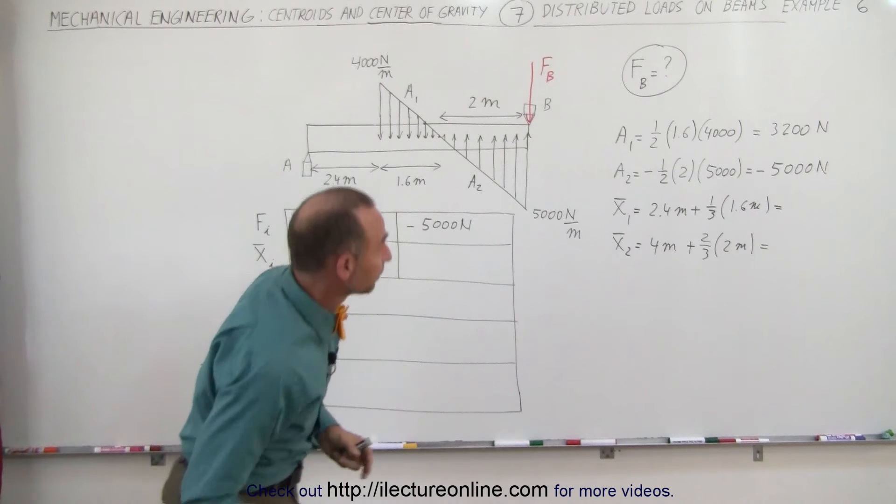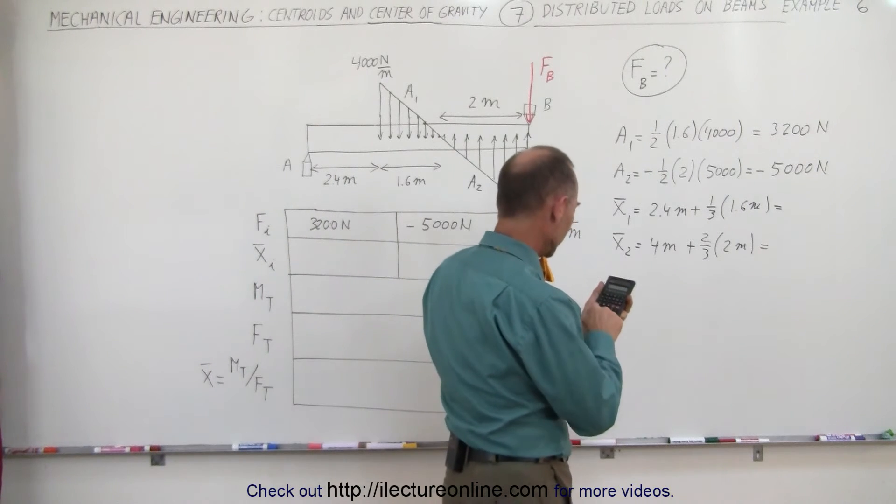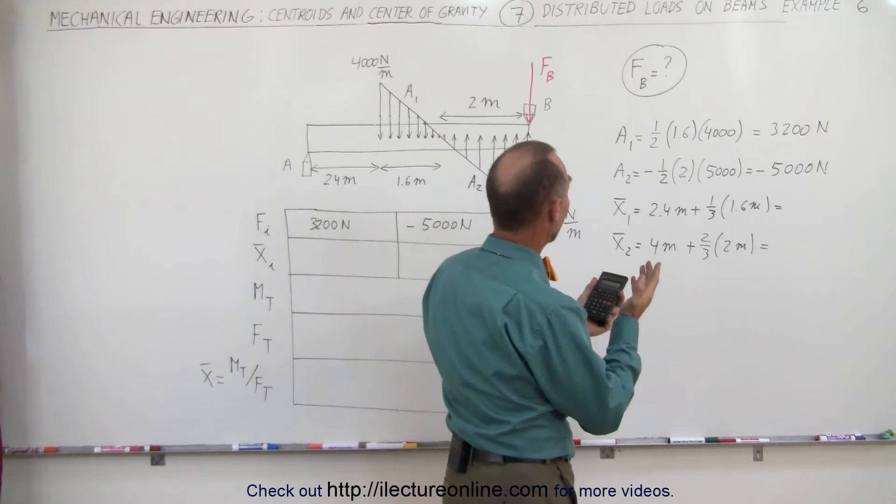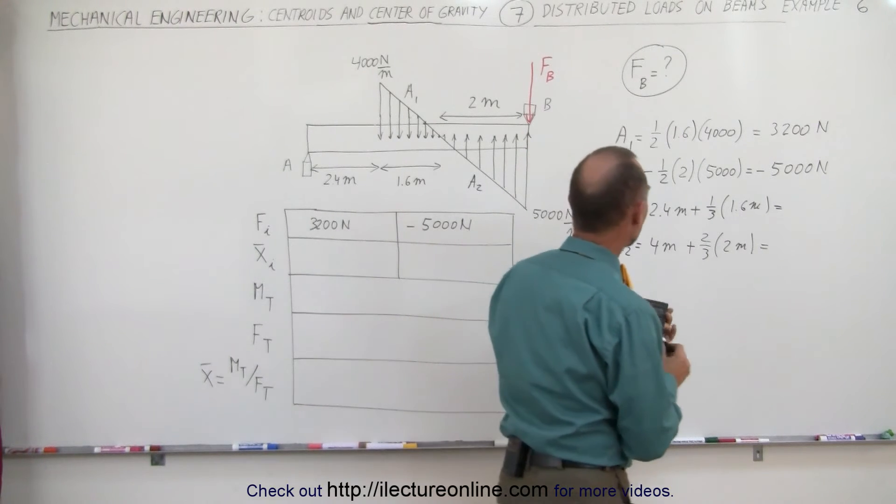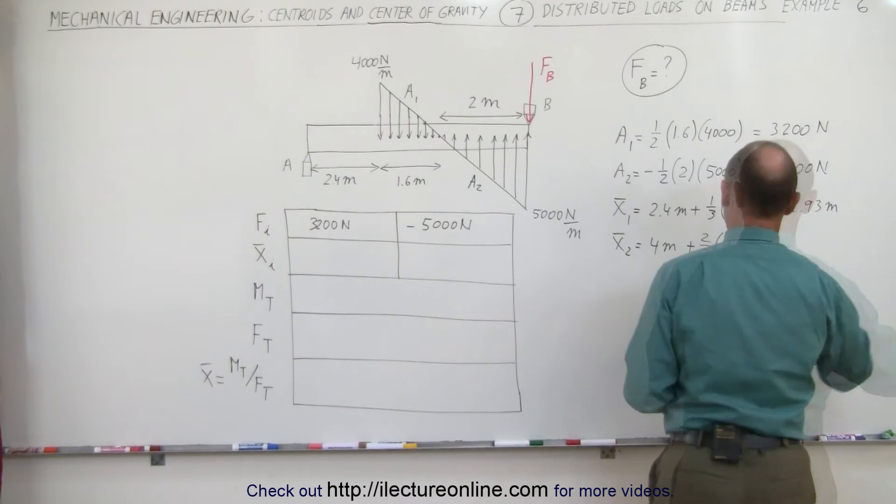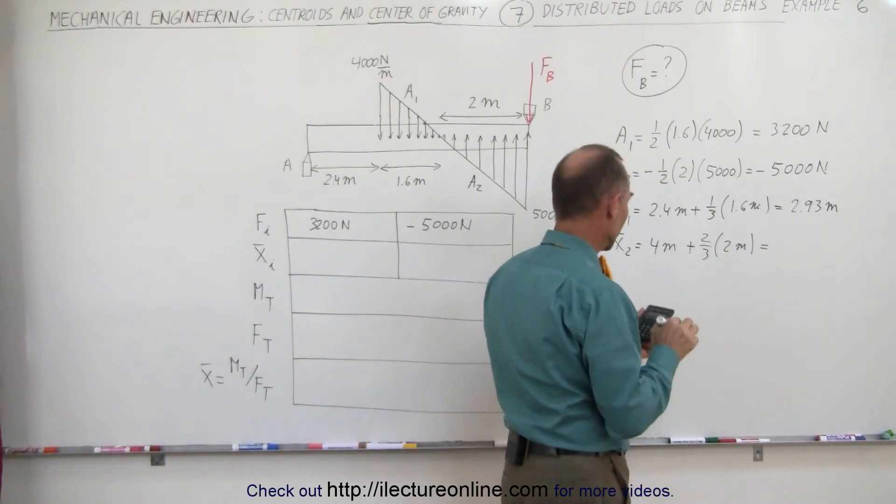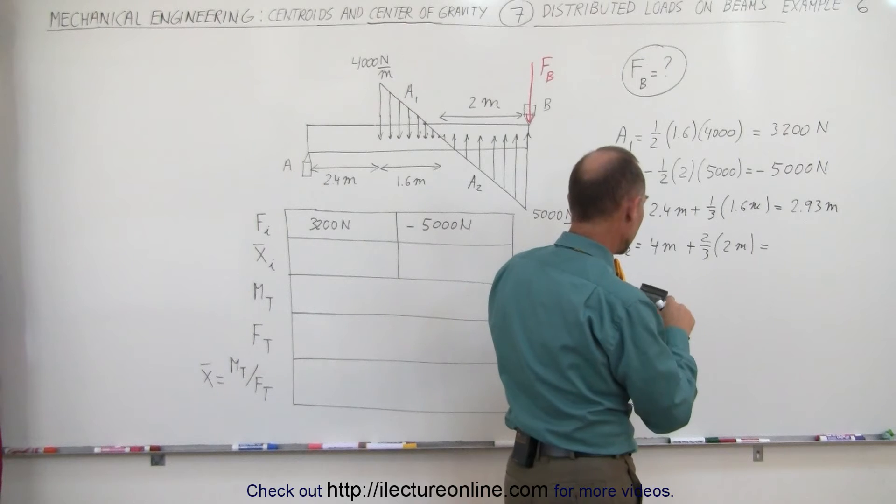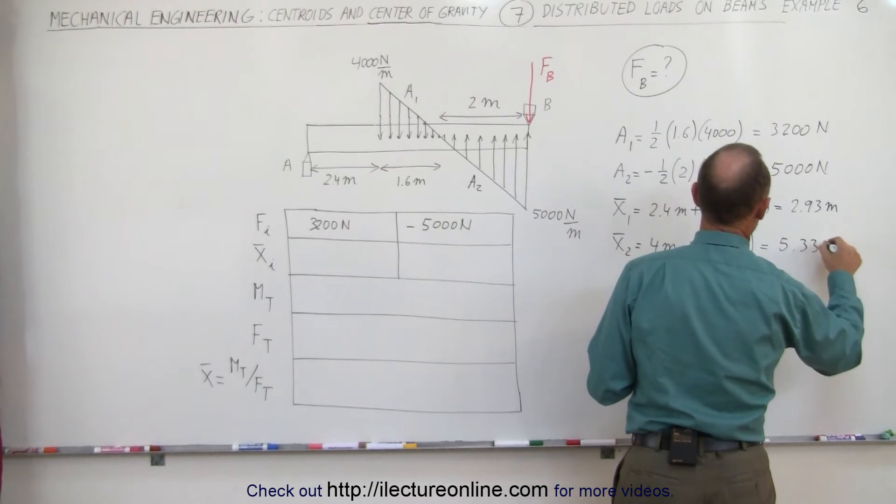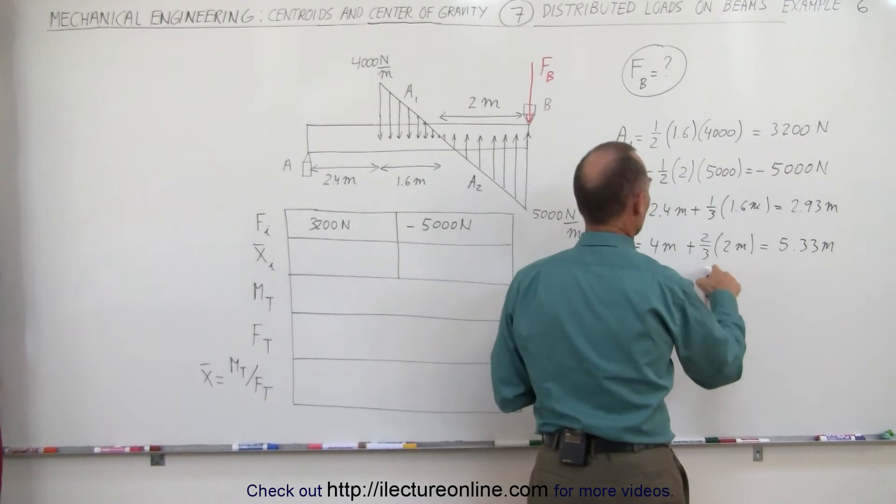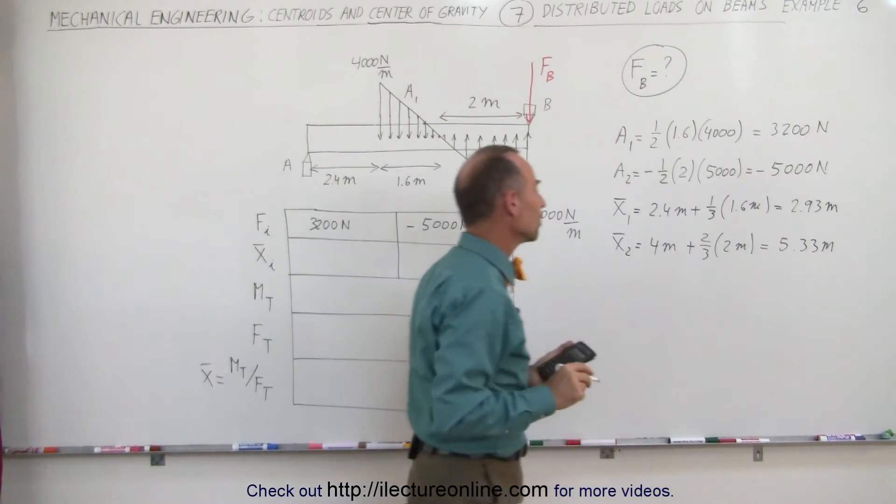Let's find out what that is equal to. 1.6 times 1 divided by 3, then plus 2.4, equals 2.93 meters. And for this one here, we get 4 divided by 3, that's 1 and a third, plus 4, that's 5.33 meters. That's four-thirds, 1 and a third, 5.33 meters. Correct.